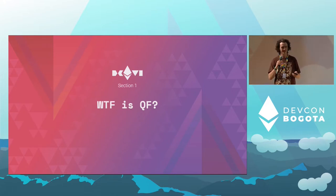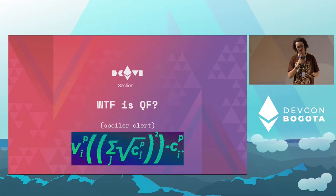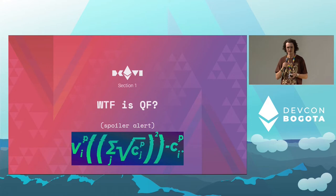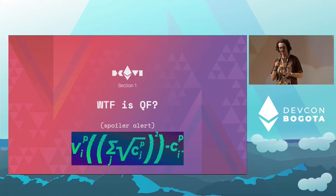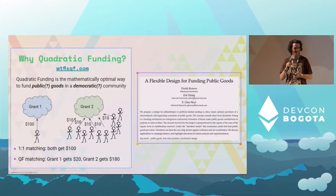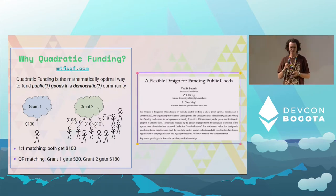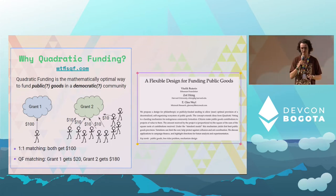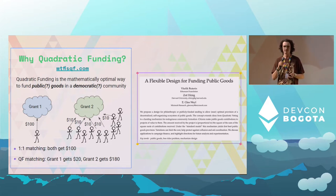WTF is QF? Basically, funding for any given project is calculated by taking the square root of each donation, adding these values together, and then taking the square of that result. The widely accepted definition of quadratic funding is it is the mathematically optimal way to fund public goods in a democratic community. There's always been emphasis on public goods and democratic communities, which covers many use cases, but perhaps not all.